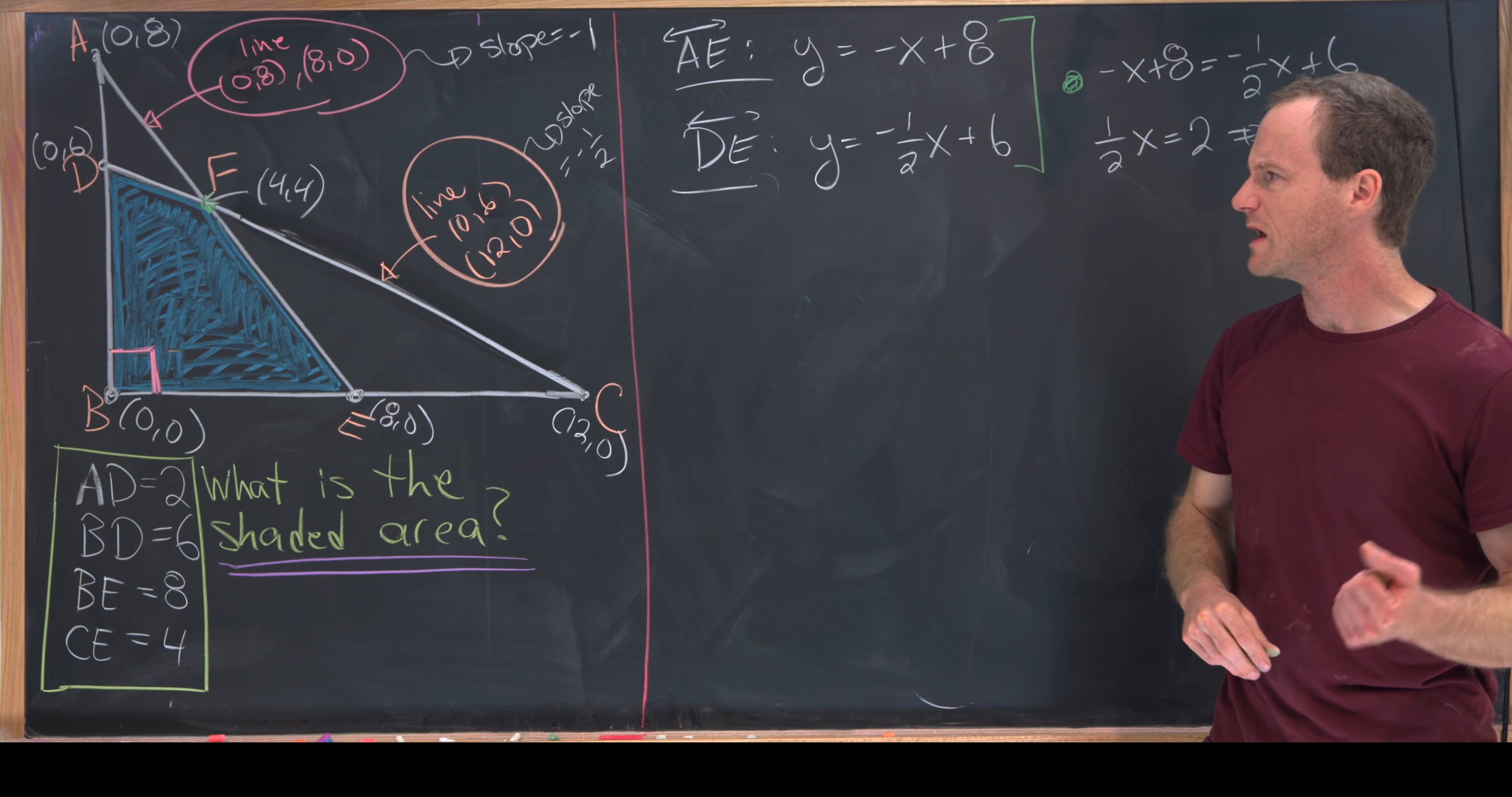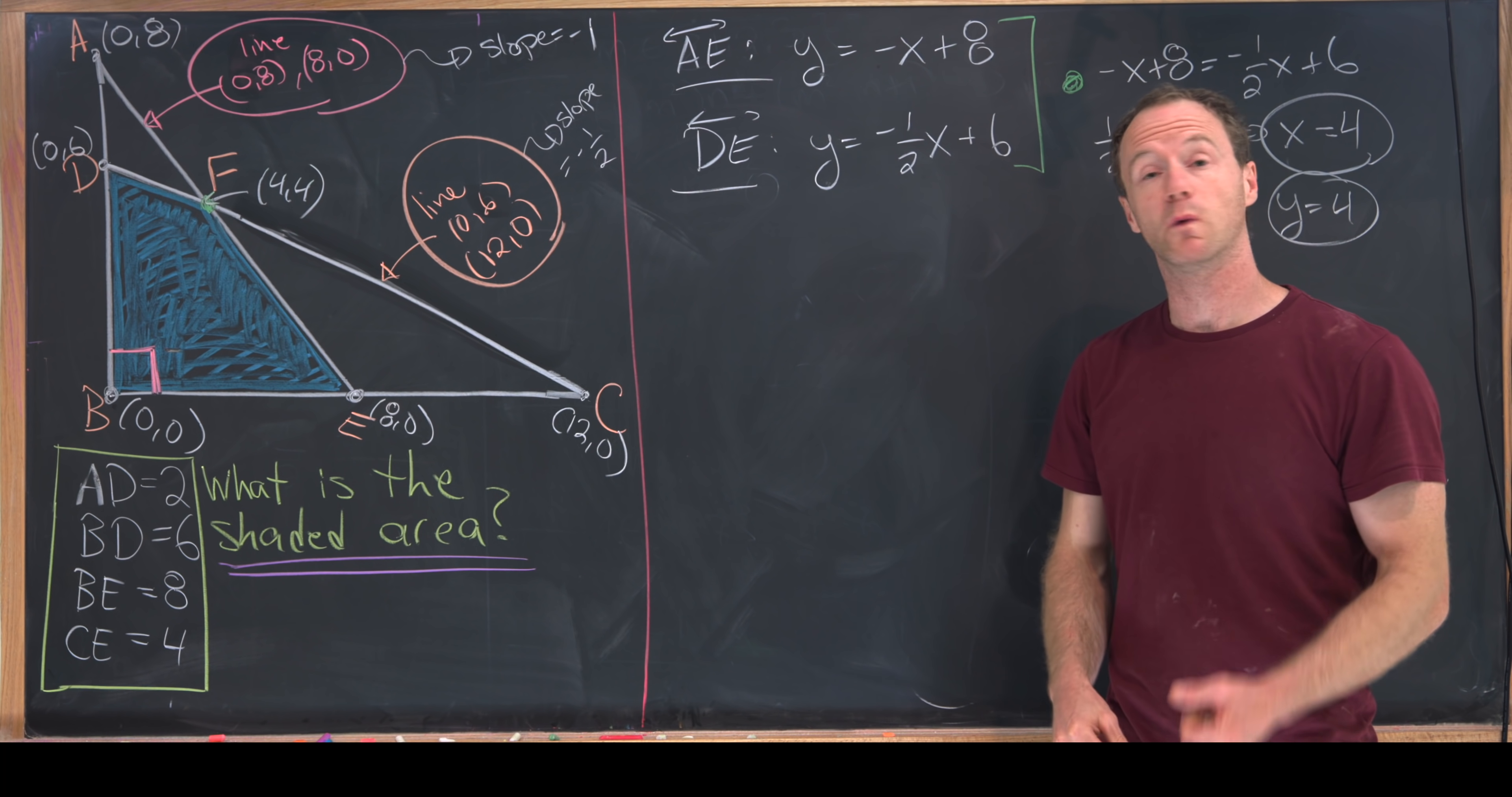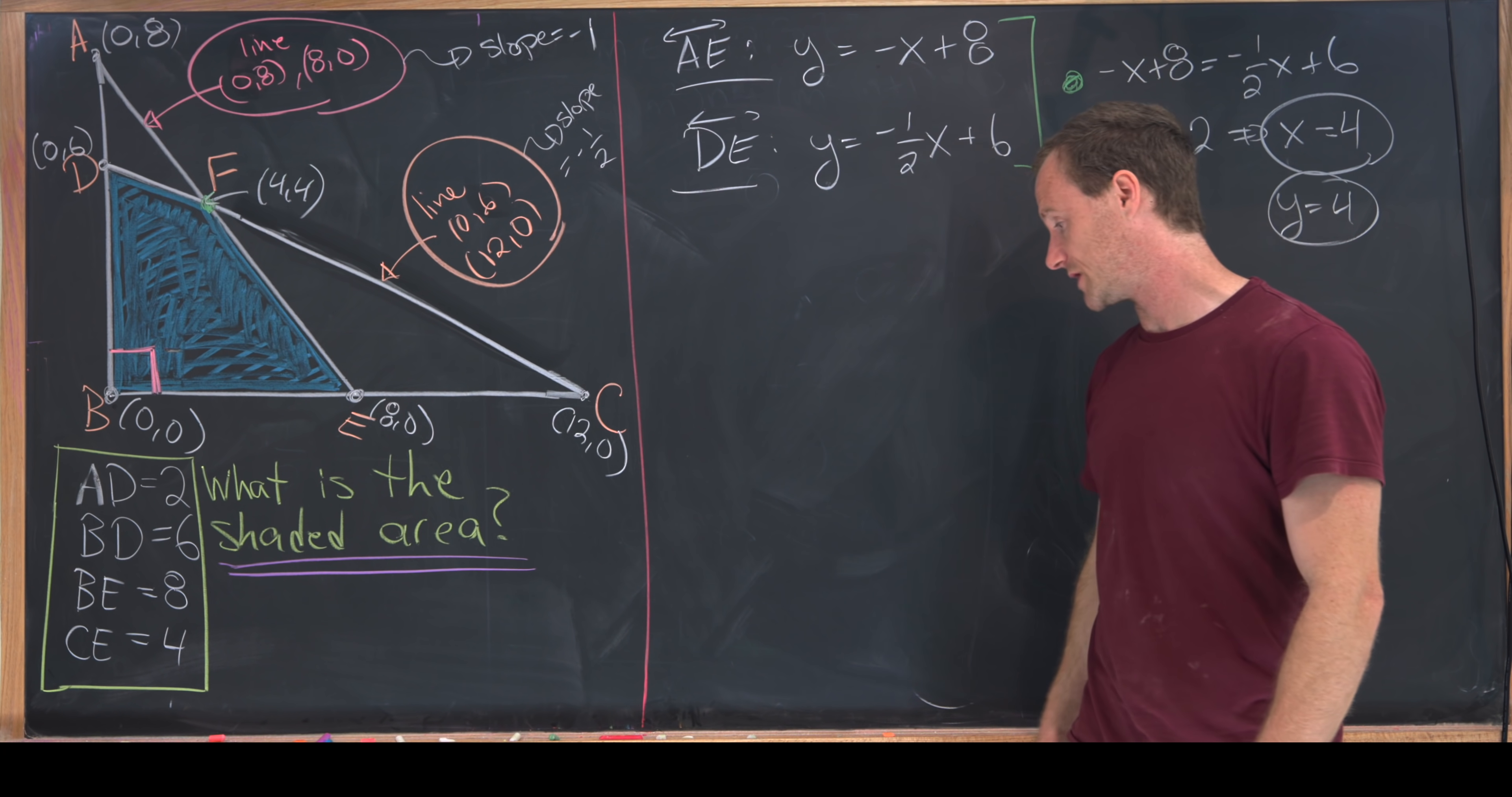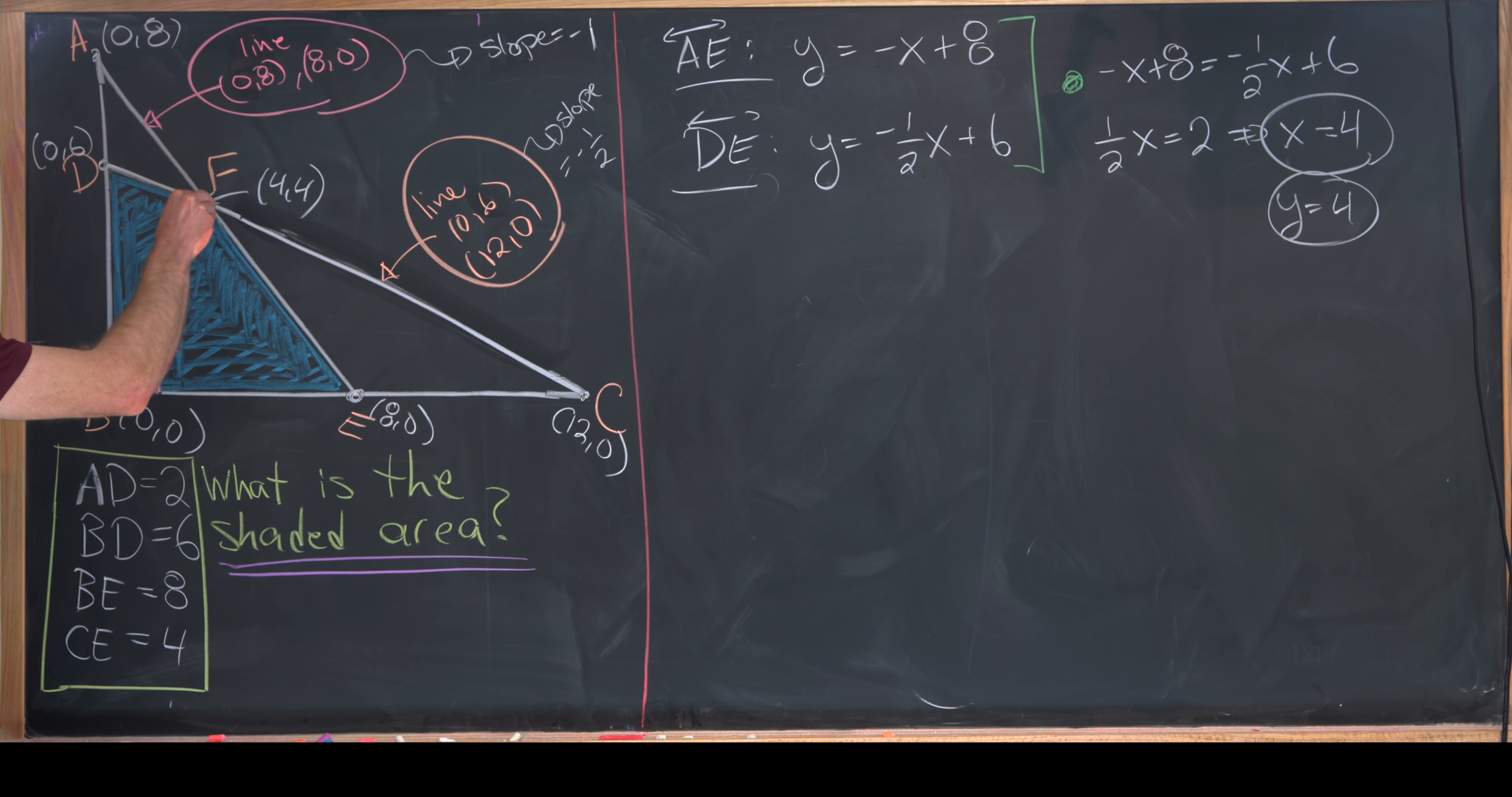From here, maybe we could take this blue region and decompose it into what will end up being a square and two triangles. I'm going to drop a vertical line from this intersection point (4, 4) down here to the x-axis. That'll be (4, 0), and then drop a horizontal line over here, that'll be (0, 4).